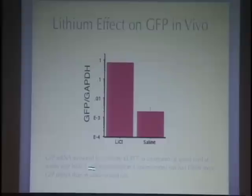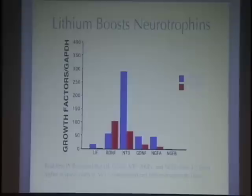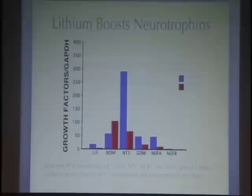We measured green fluorescent protein RNA expressed in the spinal cord — there is over a thousand times more GFP in the spinal cord of lithium-treated animals. Even more significantly, when we looked at messenger RNA for neurotrophins in lithium-treated animals, there is much more LIF, NT3, GDNF, and NGF in the spinal cord. NT3, GDNF, and NGF are the three neurotrophins known to stimulate regeneration in the spinal cord, as reported by more than a dozen laboratories.